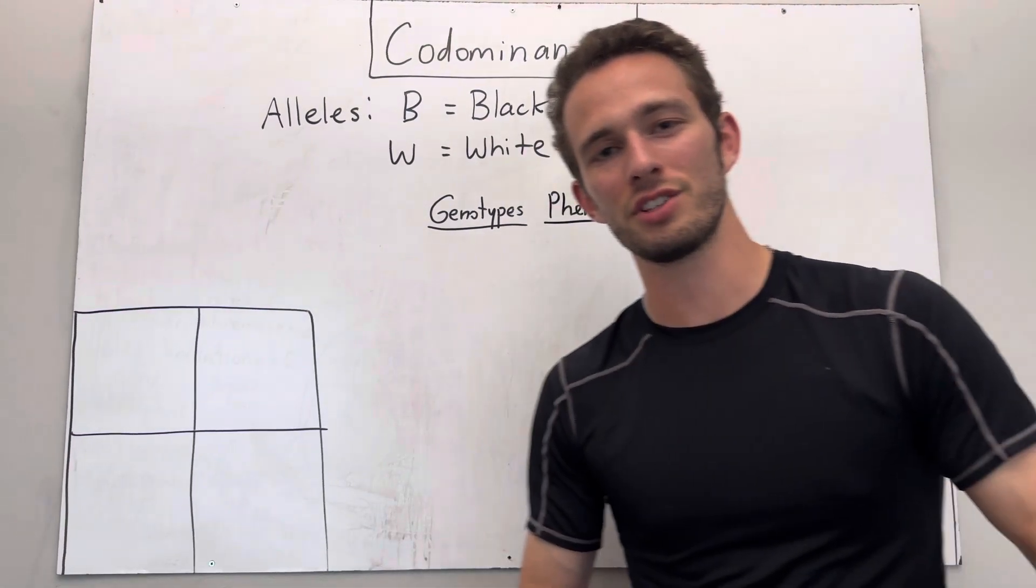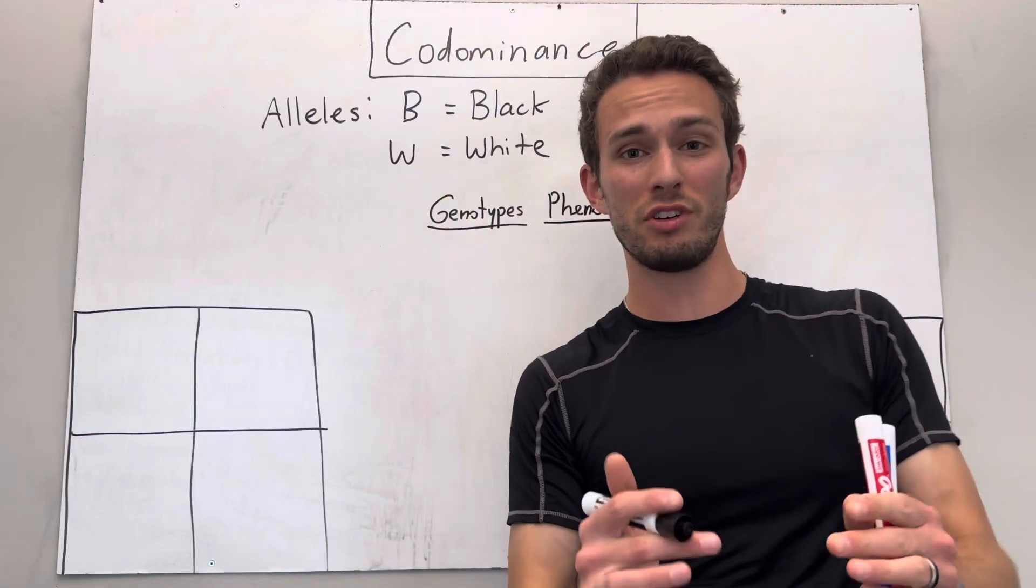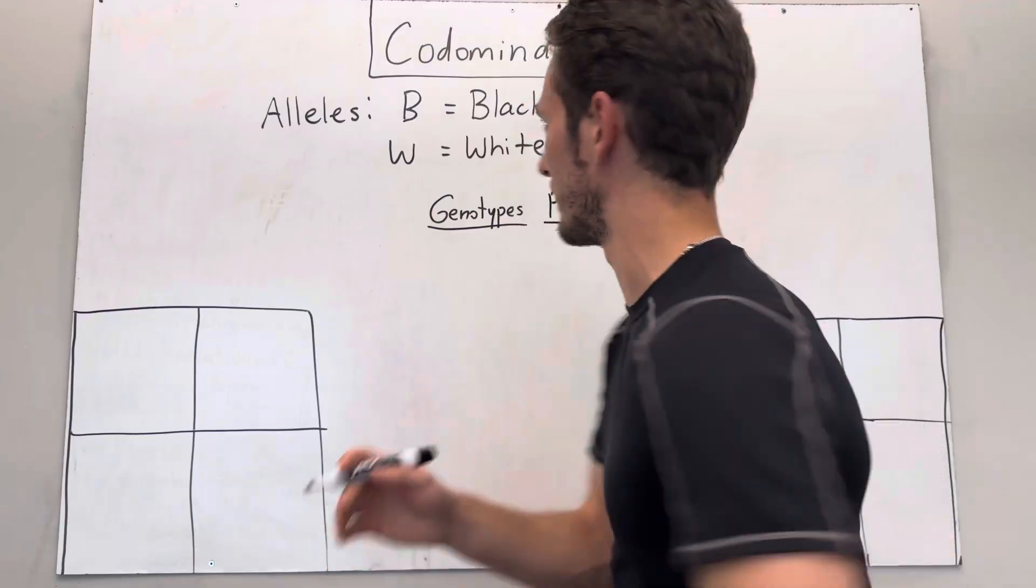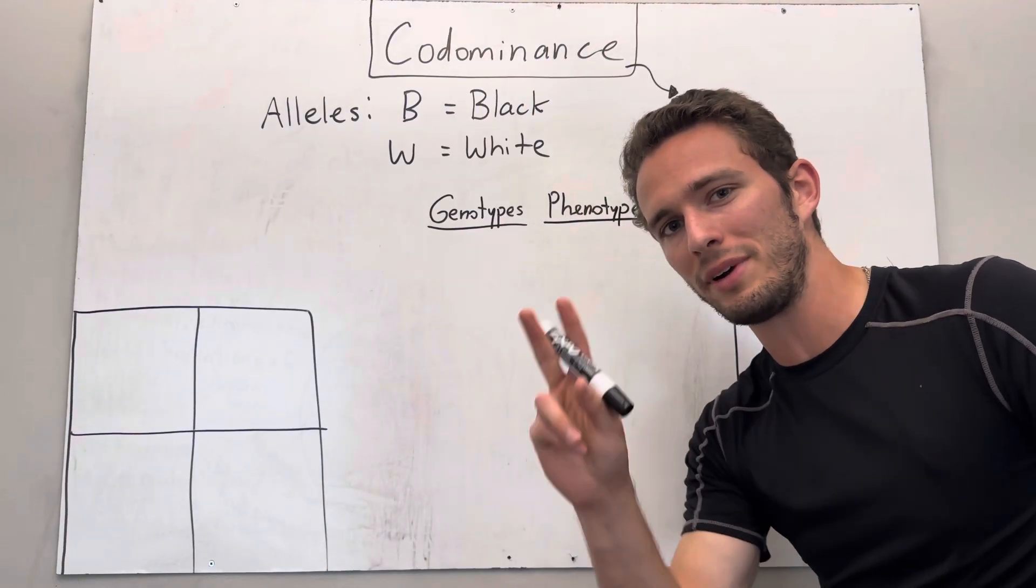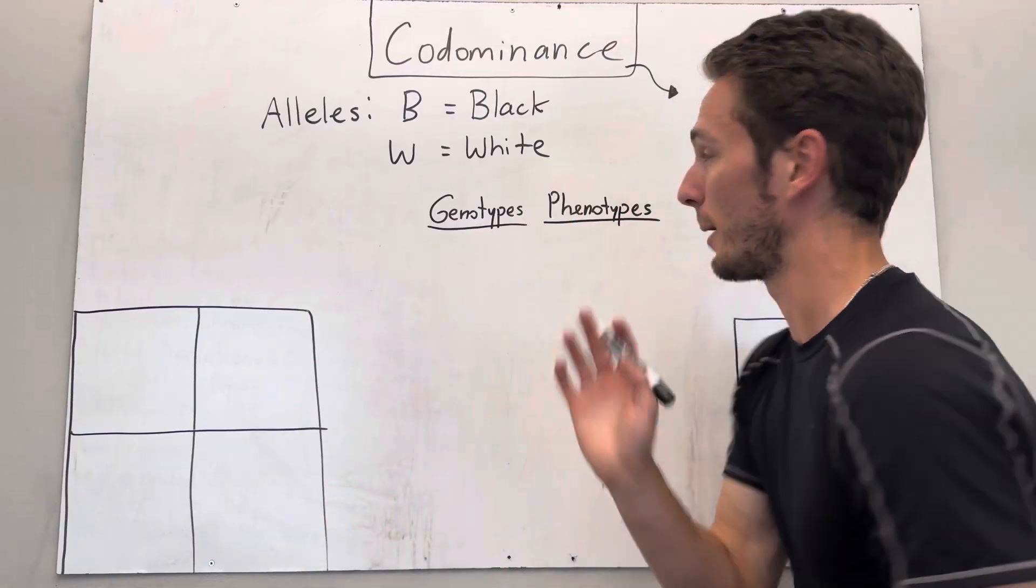Hey everybody, on this series of Punnett squares we are going to be going through co-dominance. This one's relatively simple. The definition of co-dominant inheritance is when two dominant alleles will both fully show up in the phenotype.